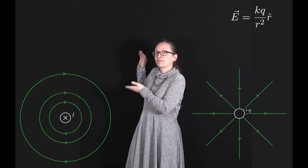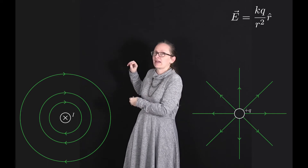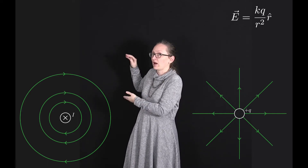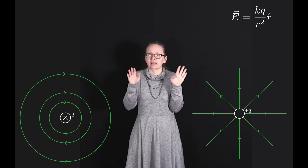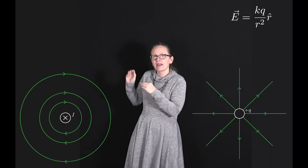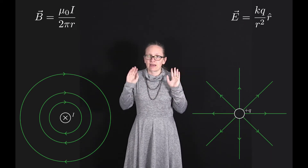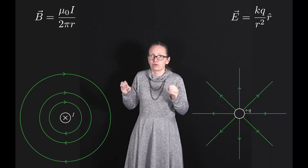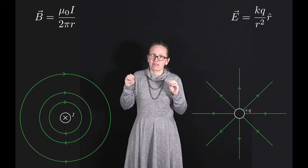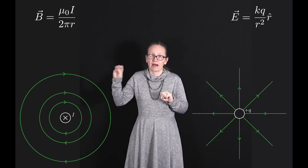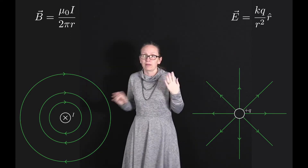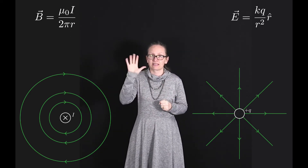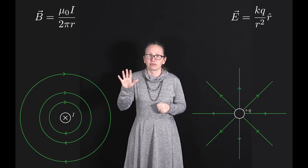For the magnetic field case, let's generate that with a current-carrying wire carrying the current into the screen. We'll let the current have magnitude I. The magnetic field due to a current-carrying wire is given by B = μ₀I / 2πR, and these field lines follow circular tangential paths. We can work out the exact direction using the right-hand rule.